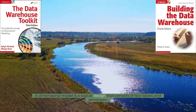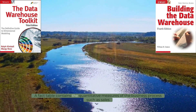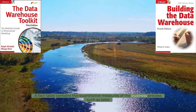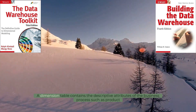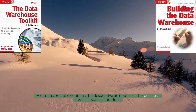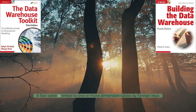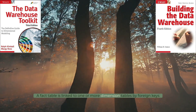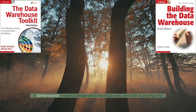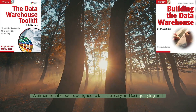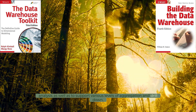A dimensional model is a logical design that consists of fact tables and dimension tables. A fact table contains the quantitative measures of the business process, such as sales amount, order quantity, or profit margin. A dimension table contains the descriptive attributes of the business process, such as product name, customer name, or order date. A fact table is linked to one or more dimension tables by foreign keys, forming a star or snowflake schema. A dimensional model is designed to facilitate easy and fast querying and analysis, as well as to support various levels of aggregation and drill down.